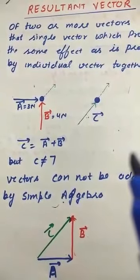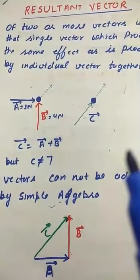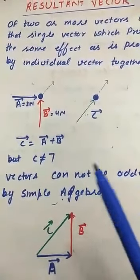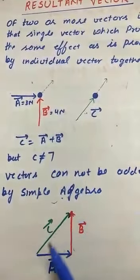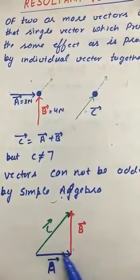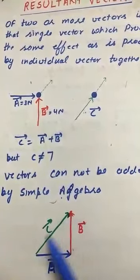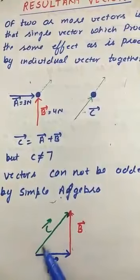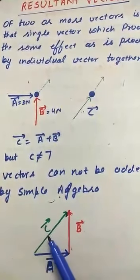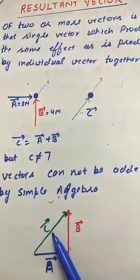If vector A is 3 Newton and vector B is 4 Newton, can we say vector C is 7 Newton? No — vectors cannot be added by simple algebra because they also have direction. When we draw vector A and vector B geometrically, vector C turns out to be 5 Newton.